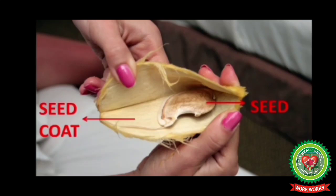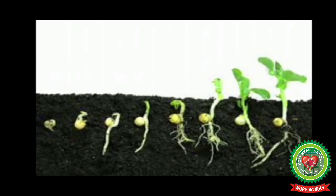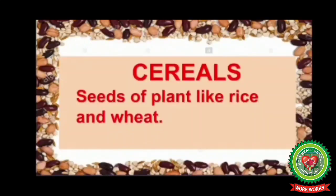Our next term is seed coat — the covering of a seed. Here you can see a seed coat and a seed. Next term is germination — the process by which a seed grows into a new plant. Here you can see a seed growing into a new plant.